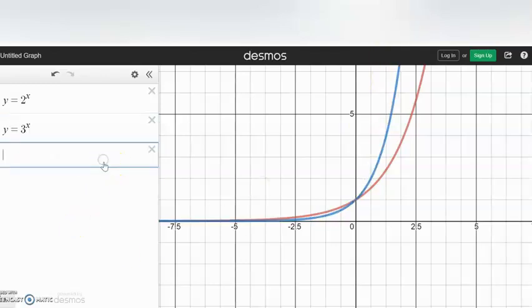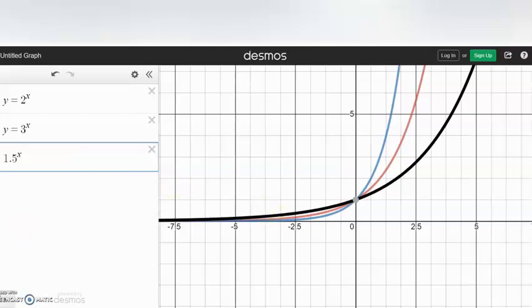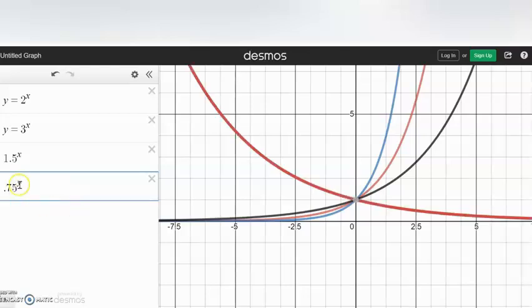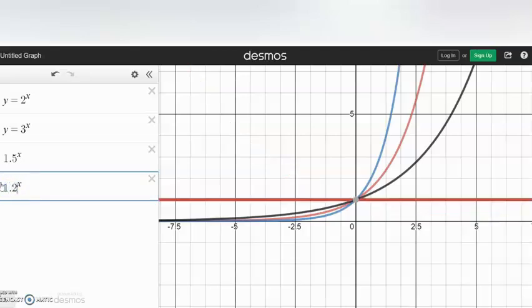So I could also have things like 2.5 to the x. And as you would probably guess, it should fall right between those two values. Or I could have 1.5 to the x. Notice it's less steep. And as I keep reducing that, whoa, that got less than 1, and it starts to go down.